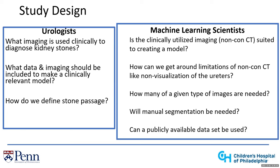As a machine learning scientist, we concentrate more on the type of data used to create a model — whether non-contrast CT or contrast-enhanced CT — and how we get around the limitation of non-contrast CT to visualize organs such as ureters. We also consider how much data is needed, whether fewer than 50 scans is sufficient or we need more than 100, whether manual segmentation is needed to assist model training, and whether publicly available datasets could be used as an external dataset.